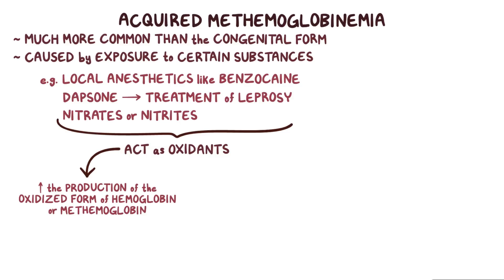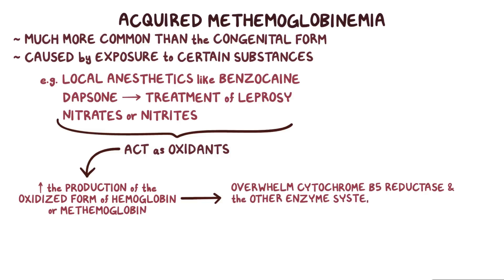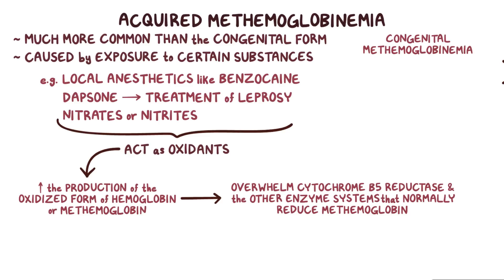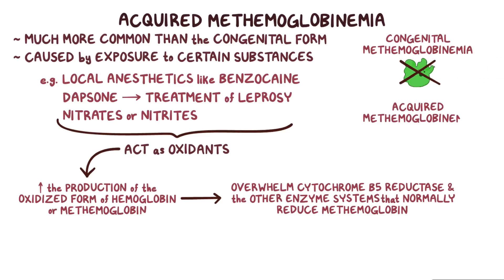This excessive production of methemoglobin can overwhelm cytochrome B5 reductase and the other enzyme systems that normally reduce methemoglobin. So, in congenital methemoglobinemia, there's a lack of boss enzymes, while in acquired methemoglobinemia, certain substances like medications create more slacker heme groups.